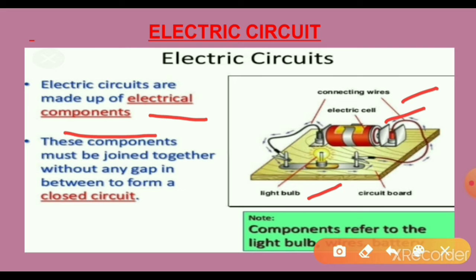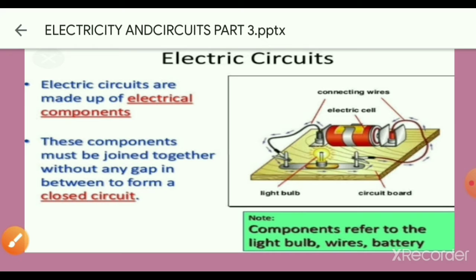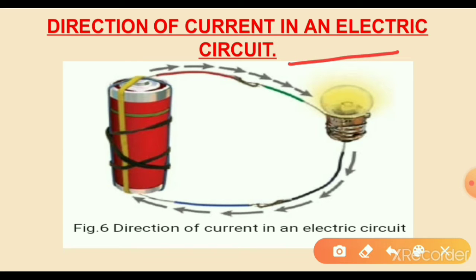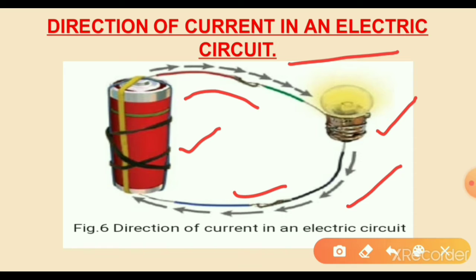Next, let us discuss the direction of flow of current in a socket. How does the current flow in the socket? Observe that image — direction of current in an electric socket. What are the components in this socket? Electric bulb, electric cell, and connecting wires. Now let us discuss the direction of current in an electric circuit.